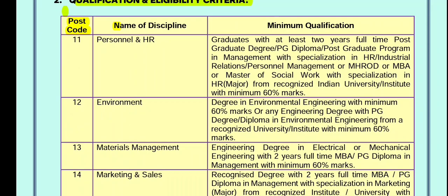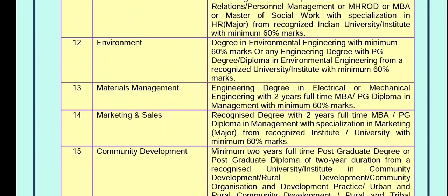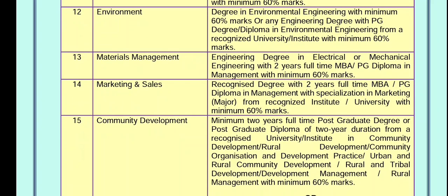For Environmental Engineering, a degree in Engineering with 60% marks, along with a PG Diploma in Environmental Engineering at 60%, is required. For Material Management, a B.Tech with Electrical or relevant materials background plus a PG Diploma in Management at 60% is needed.